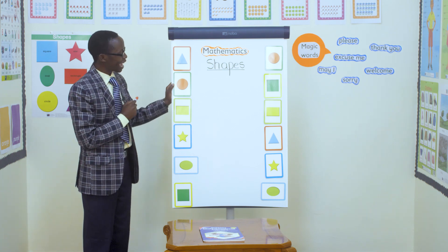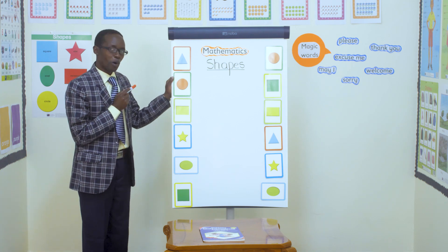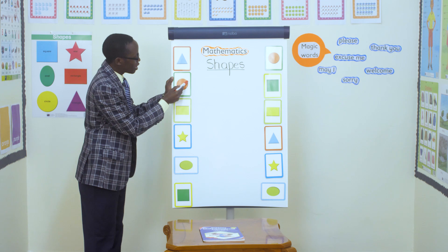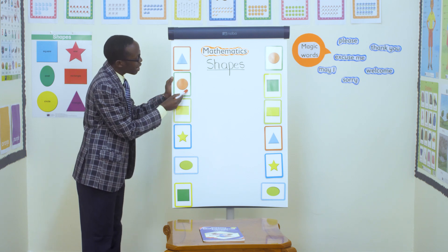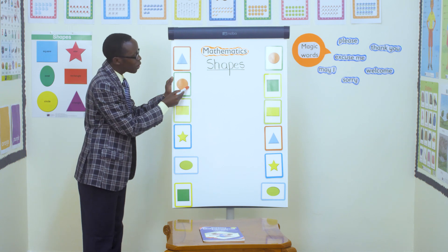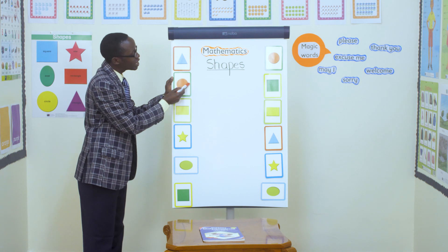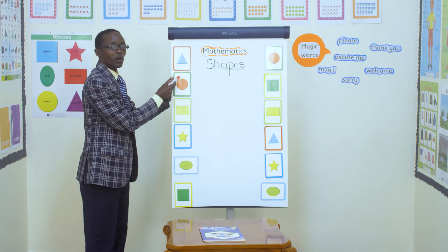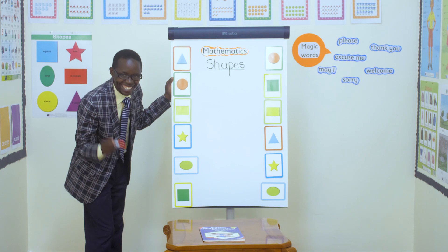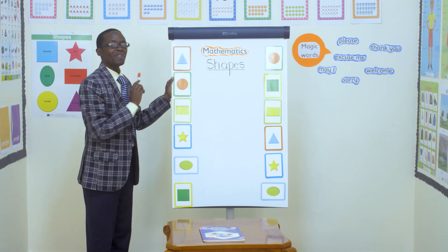Can you look at this circle? Wonderful. It looks like a ball. So a circle is usually round, round, round — like a wheel, like a ball, like a chapati. I know you like chapati. Round, like a chapati.